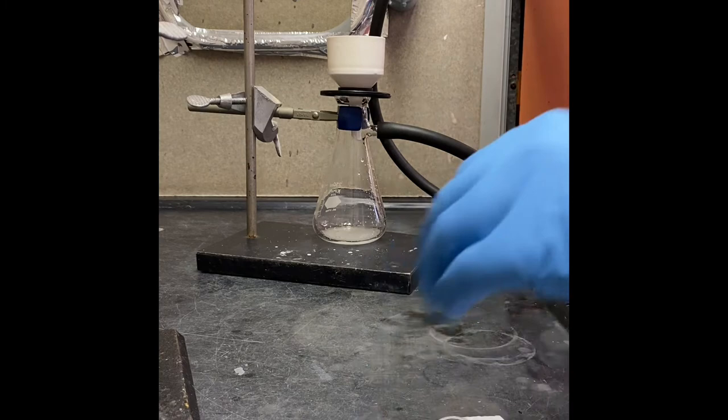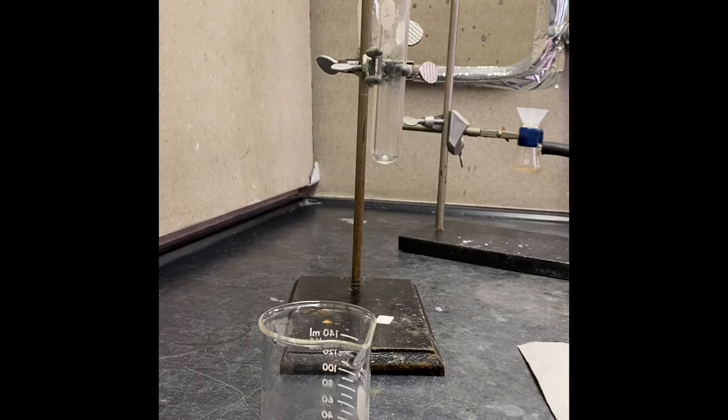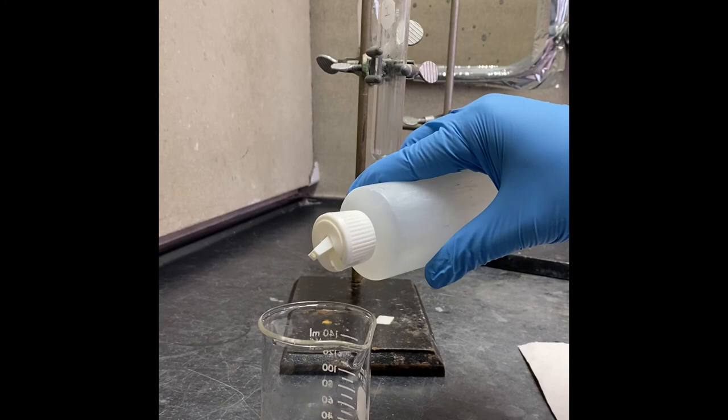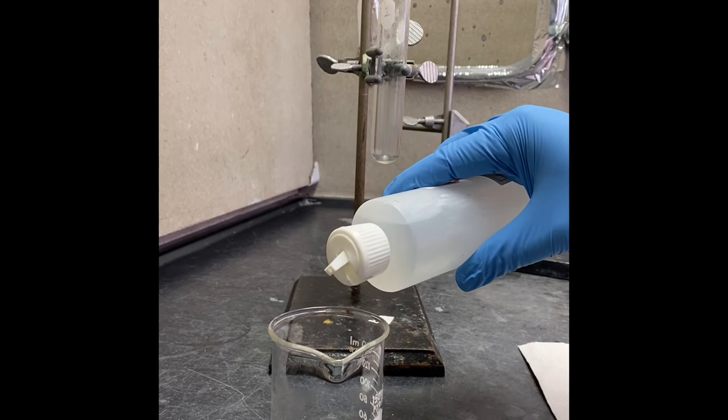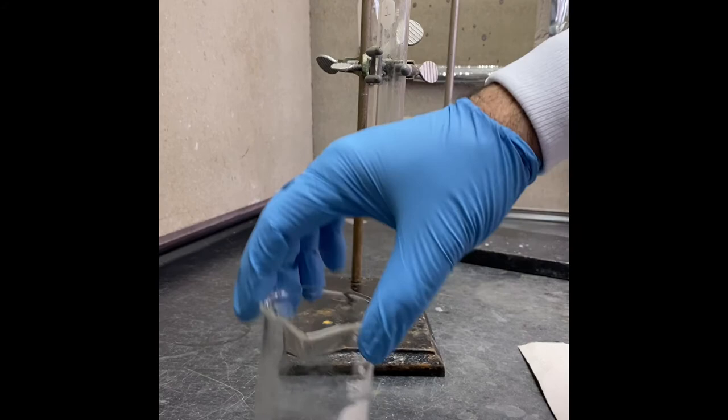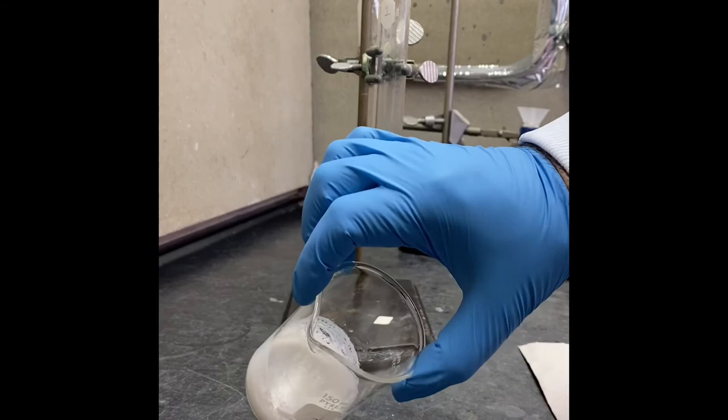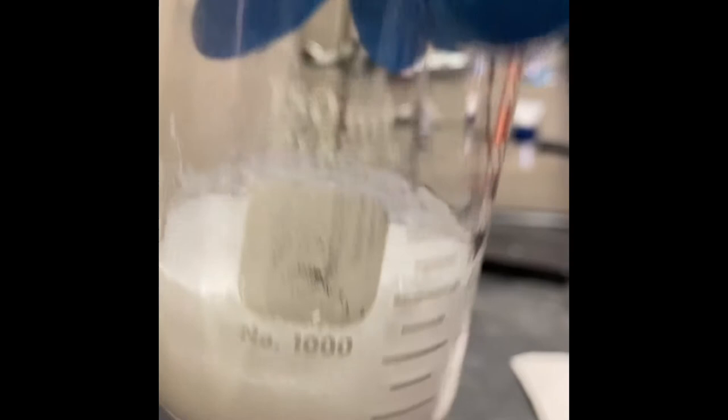I transferred my aqueous layer to the beaker and I'm going to add one molar HCl solution to make that solution acidic, so we're going to get the benzoic acid. As you see, with each drop I'm adding the benzoic acid forms. I'm going to mix that up - it's disappearing because it's still basic. I'll just keep adding. After we add enough amount of the hydrochloric acid one molar, as you see we got our benzoic acid.